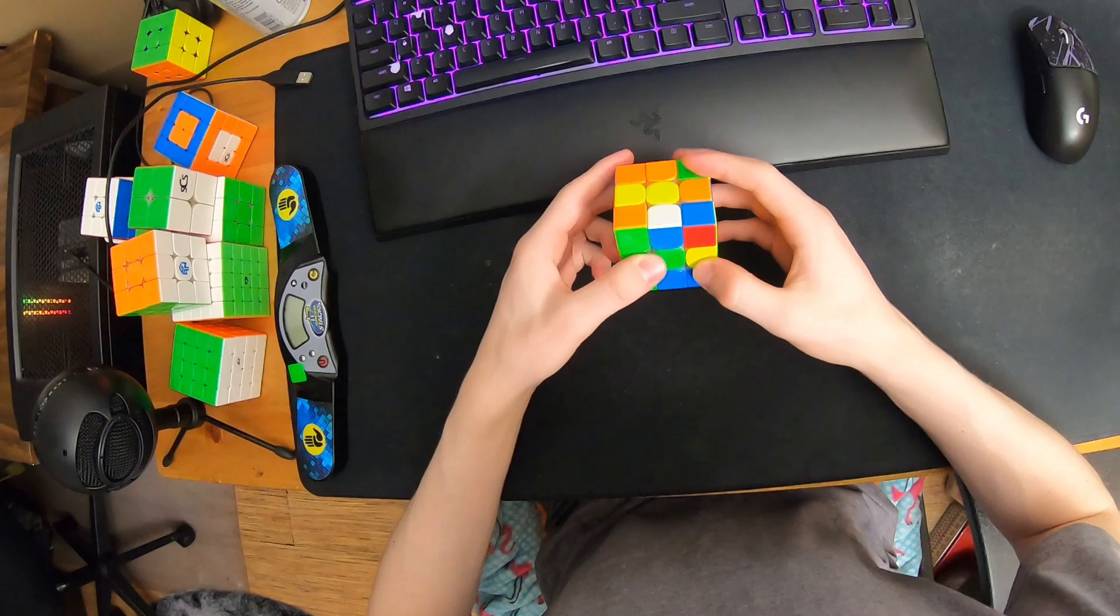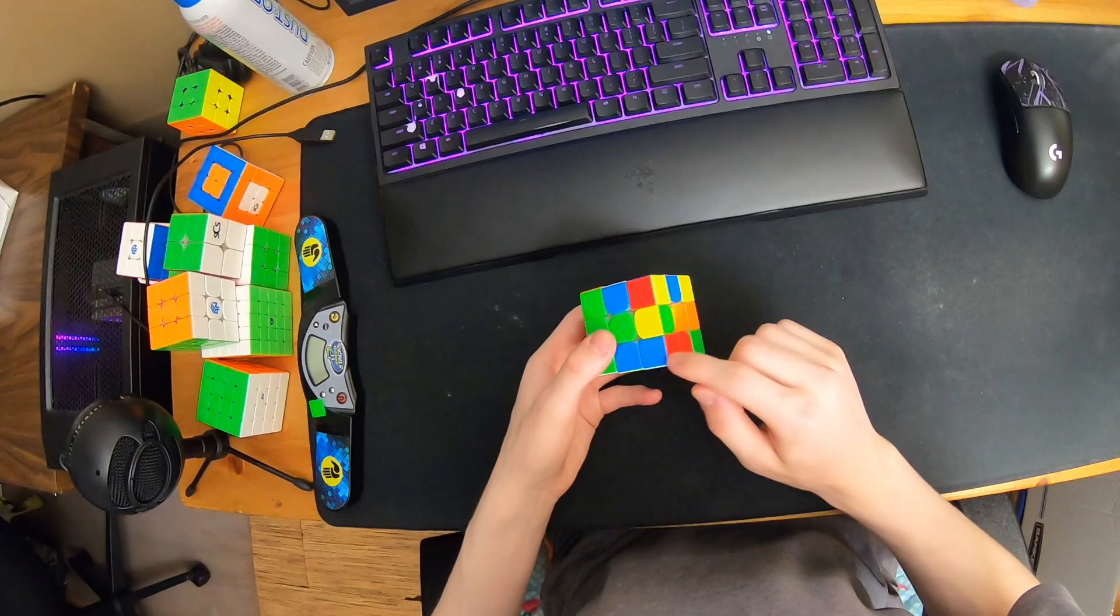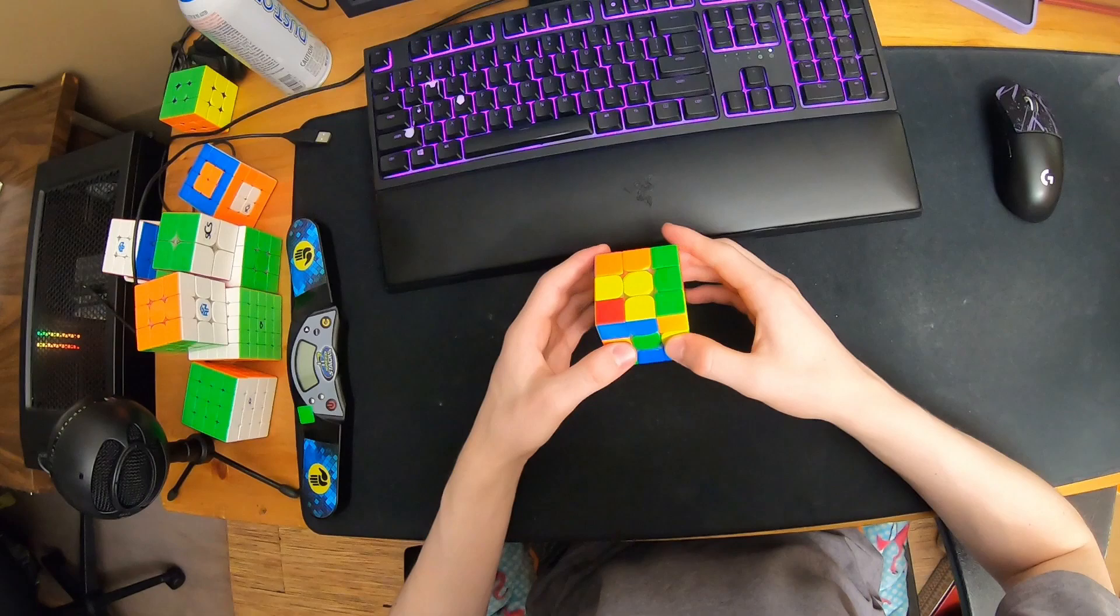Then I do D to R prime and I have this corner solved and this edge solved. To preserve this corner and also take this pair out, you do R prime R prime F to R D to have the X-cross on the back.